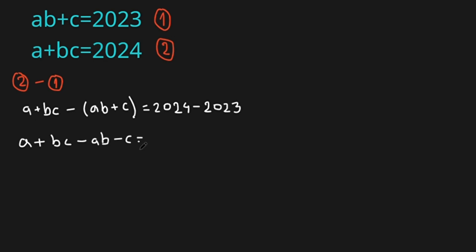Now from A and minus AB we can take out an A, and from BC and minus C we can take out a minus C. So we have A times brackets 1 minus B, and then minus C times brackets 1 minus B. All this equals 1.